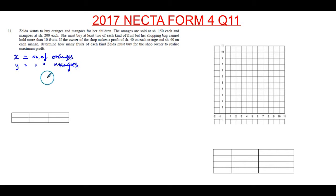And the next thing you want to do is look for your constraints. So constraints are your restrictions. In this case, you're told Zilda must buy at least two of each kind of fruit. So this means X has to be greater or equal to 2, and also Y has to be greater or equal to 2.